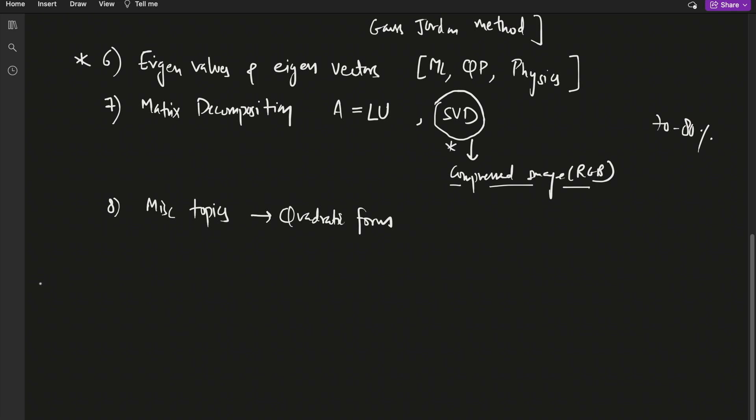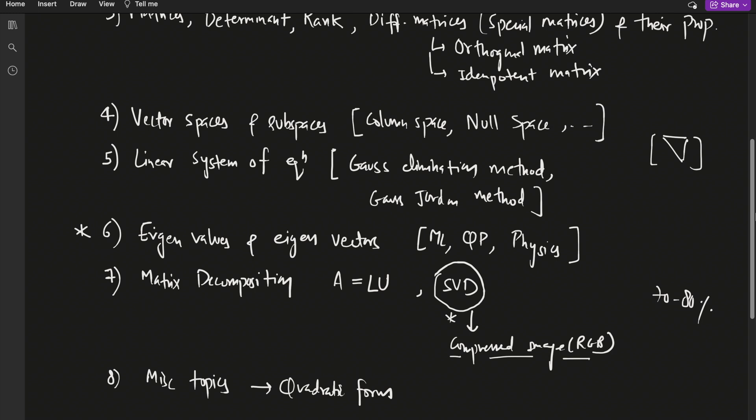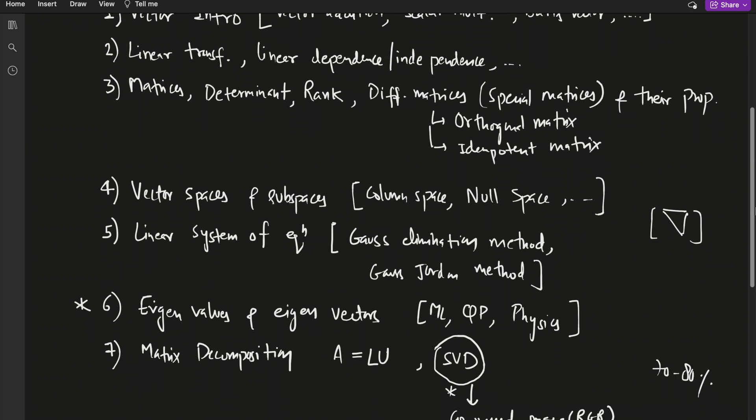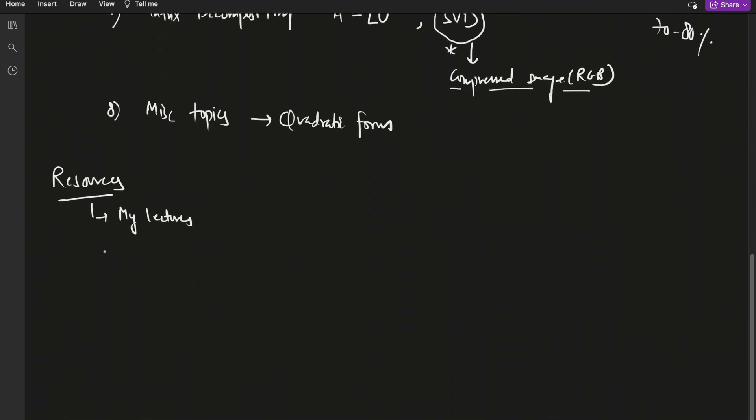Coming to the next part: resources. First is obviously my lectures, I will be covering all the topics which are there in GATE DA and these topics are also helpful if you are a machine learning engineer. If you are not giving GATE, these topics are very important for a machine learning engineer as well. The second one is I will be covering a lot of PYQ but you can also refer to the PYQ of linear algebra from other branch papers, other GATE papers.